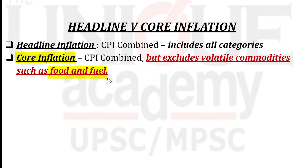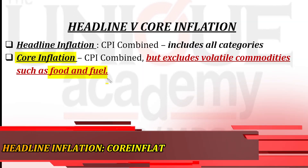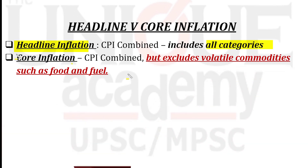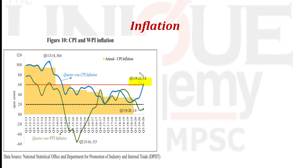Let's quickly review: headline inflation is normal inflation that includes all categories. Core inflation is headline inflation minus food and fuel. Now coming back to the economic survey data — CPI is 5.8% and WPI is 1%, giving a divergence of 4.8%. This divergence is very rare and that is why this concept is very important for the preliminary exam 2020.